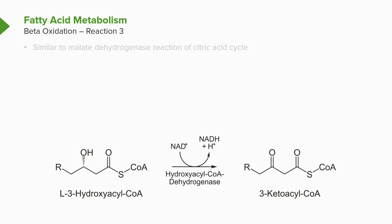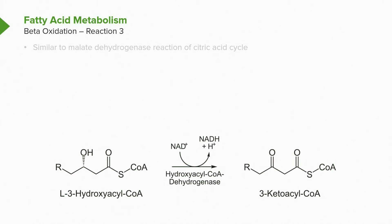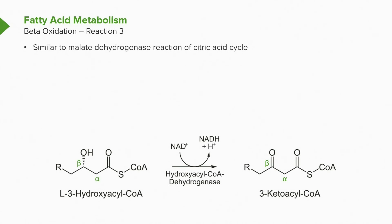The second oxidation of fatty acyl-CoA converts the hydroxyl group on the beta carbon into a ketone. This oxidation is catalyzed by the corresponding enzyme and produces NADH + H⁺ through the transfer of electrons and protons. This reaction is similar to the malate dehydrogenase reaction of the citric acid cycle, and it prepares us for the final cleavage step. The NADH, like FADH2, can be used to generate ATP via oxidative phosphorylation.